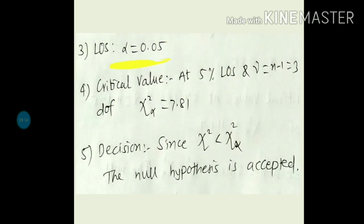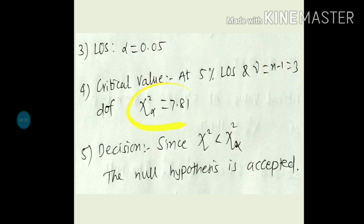Level of significance is not given; suppose we take 5%. At 5% level of significance and N minus 1 degrees of freedom — there are 4 observed frequencies, so N minus 1 is 3. Critical value is 7.81. Calculated value 4.73 is less than critical value 7.81, so null hypothesis is accepted — proportion of beans is in the given ratio 9:3:3:1.